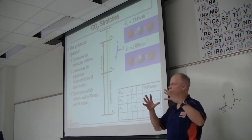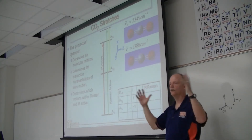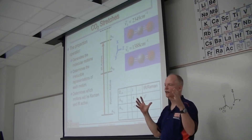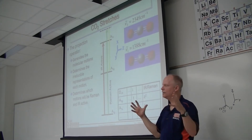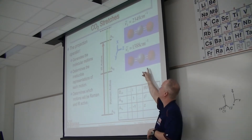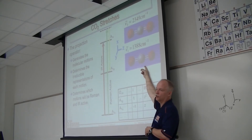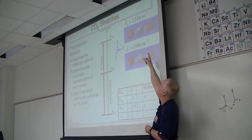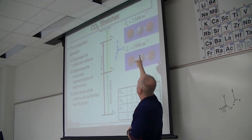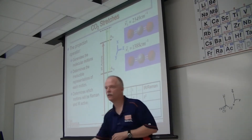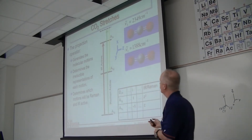Raman is interacting with the oscillation of the electron cloud. If the size of the electron cloud changes, then it's highly Raman active. You can see how the whole molecule shrinks and the whole molecule expands — so this one would be very Raman active, giving a large Raman peak. But for the asymmetric stretch, the molecule size doesn't change — the oxygen-to-oxygen distance stays about the same — so it's not Raman active.